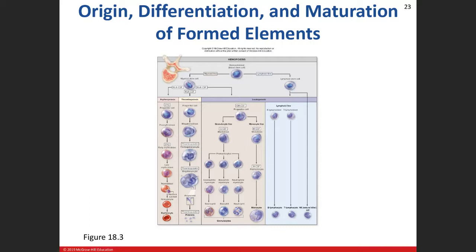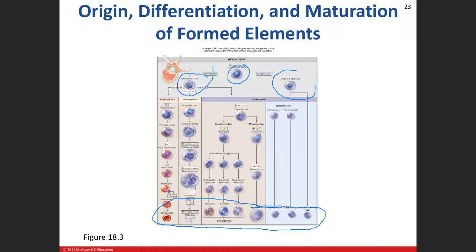What I want you to know is the pluripotent stem cell and the two lines, then go all the way to the final stages for all of these cells and know which line they come from. The easiest way: everything from the lymphoid line is lymphocytes — B lymphocytes, T lymphocytes, and natural killer cells. Everything else — platelets, erythrocytes — goes to the myeloid line.